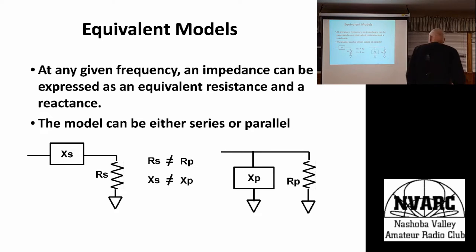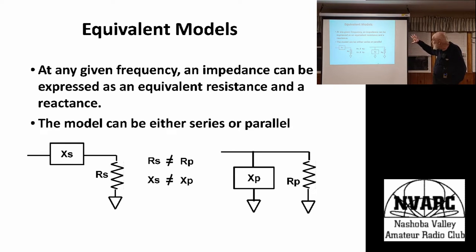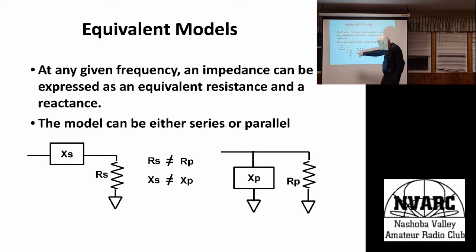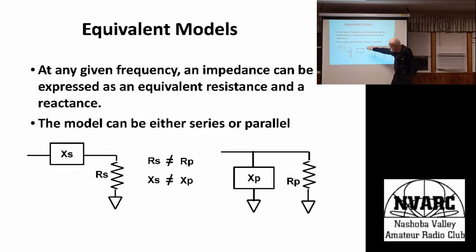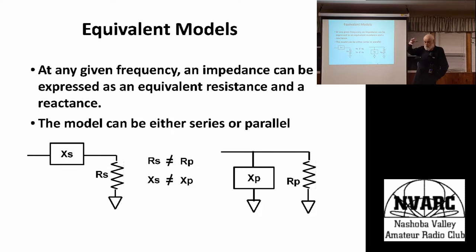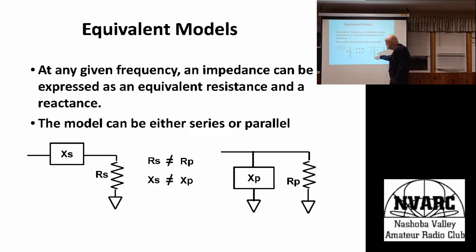At any one frequency, any kind of RLC combination can be modeled in either of two ways: a reactance in series with a resistance, or a reactance in parallel with a resistance. These are not equal to each other — there's a transformation between them. There may be all kinds of stuff inside the network that looks completely different at some other frequency, but at any one frequency you can reduce it to either the series or parallel form.